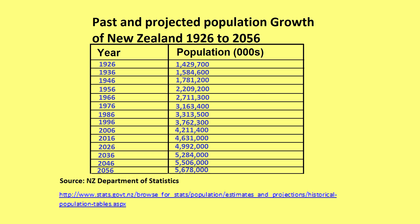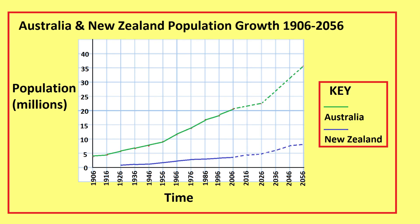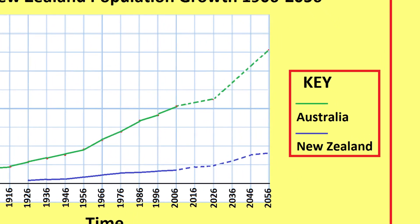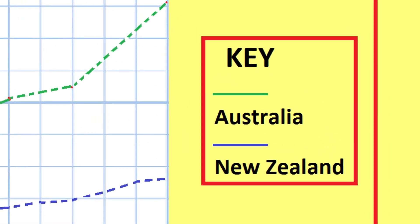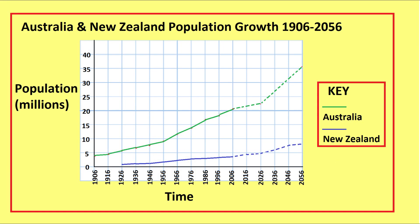In other instances, you will plot a graph using two data sets. For example, I could plot population change for New Zealand and Australia. In this case, I will draw a multi-line graph. Most of my techniques are the same as an ordinary line graph, except I will use a different colour for each country, and I will also include a key. Here is my completed graph.